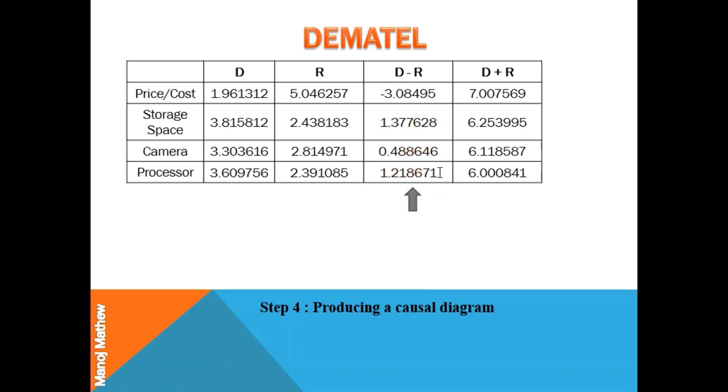If the D minus R is negative, the criteria belongs to the effect group known as receiver. Price is a receiver or falls under the effect group which indicates that price gets influenced by other criteria.